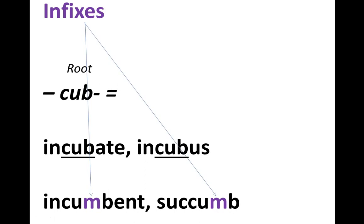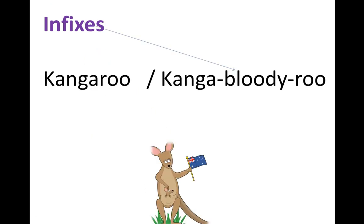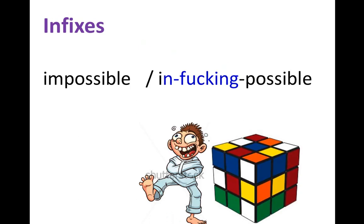Another example: 'kangaroo' — 'kang' plus 'roo,' and you insert the word 'bloody' between them, giving 'kanga-bloody-roo' — an infix case. Similarly, 'in-fucking-possible' is an infix inserted into the middle of 'impossible.'